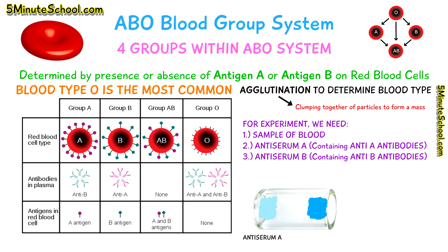We put anti-serum A on one side of a glass tile and anti-serum B on the other side. We add a sample of blood which is rich in red blood cells to each side to mix with the corresponding anti-serum. If there is agglutination present, it can usually just be seen with the naked eye, but via a microscope we can specifically see clumping together of the red blood cells.